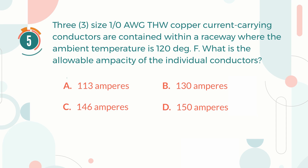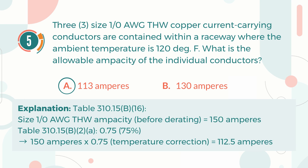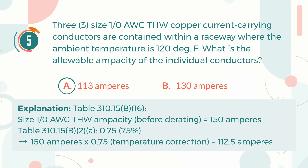The correct answer is A. 113 Amperes. Explanation: Following Table 310.15(B)(16), the ampacity of size 1/0 AWG THW before derating is 150 Amperes. Then, looking up Table 310.15(B)(2)(a) for the appropriate correction factor, with an ambient temperature of 120 degrees Fahrenheit, we have a factor of 0.75 or 75%. 150 Amperes multiplied by 0.75 equals 112.5 Amperes, rounded to 113 Amperes.